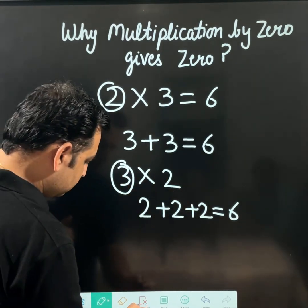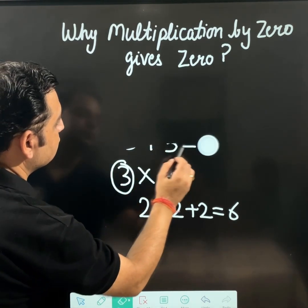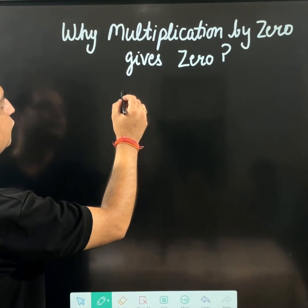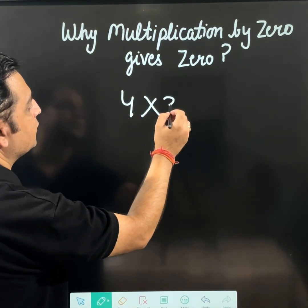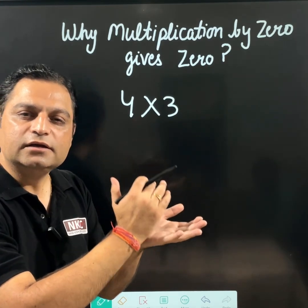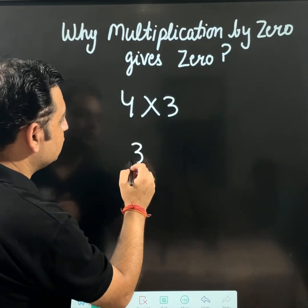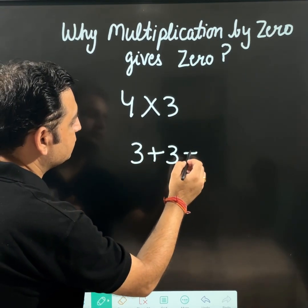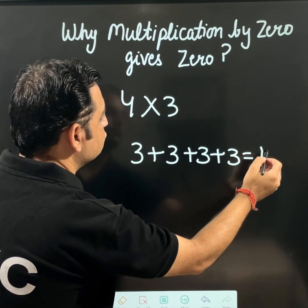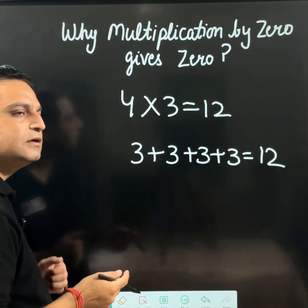We can take more examples as well. Let me show you. For example, if we have 4 times 3, see — 4 times 3 means 3 is being added 4 times. That means 3 plus 3 plus 3 plus 3, this is equal to 12. That is why 4 times 3 is 12.